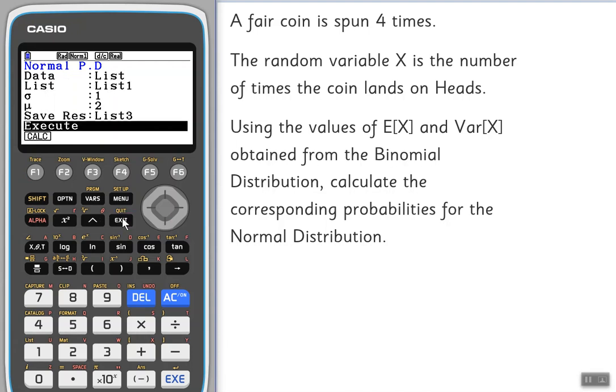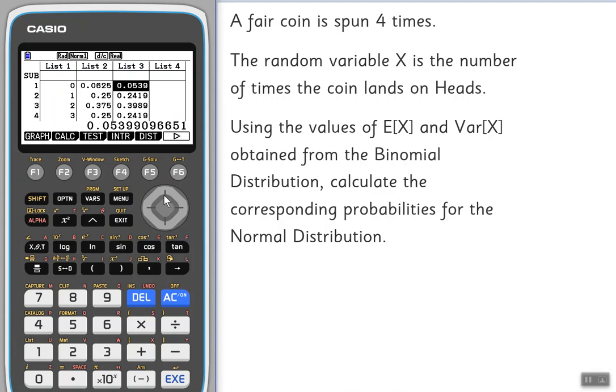If we go back to our original data list by pressing exit twice you can see them next to each other. So the binomial probability for zero was 0.0625, the normal approximation is 0.0539, and so on. These approximations aren't actually that bad, they're reasonably close to the binomial ones. The binomial ones of course are more reliable because we know it fits the binomial distribution, it's a discrete set of data, but the normal distribution is giving us a reasonable approximation.